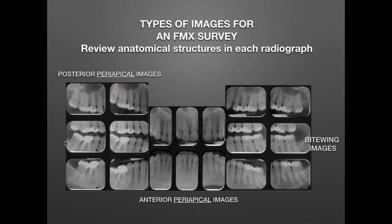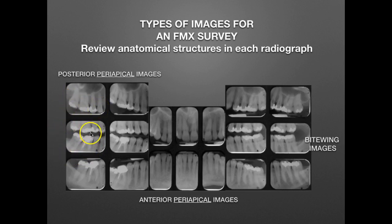Reviewing our bitewing images, we have the teeth in occlusion and we can see anatomical structures much like the periapical images: the enamel, the dentin, the pulp chamber, the pulpal canal. We see the bone level in both the bitewing and the periapical image, and with the bitewing we see the maxillary and mandibular teeth in occlusion. Moving to the anterior periapical images, we see the entire tooth from the root and apex to the crown.